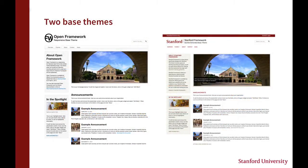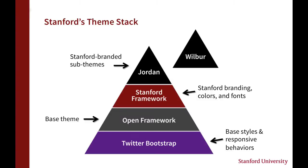We've got two base themes: Open Framework and Stanford Framework. Open Framework is what Stanford Framework is based on — it provides the responsive styles and everything you need to get started. Stanford Framework gives you Stanford branding and the look and feel of Stanford. At the bottom we've got the Stanford Theme Stack: Twitter Bootstrap, then Open Framework, then Stanford Framework, then Sub Themes. Stanford Modern is not part of this stack yet, but it might be released soon.